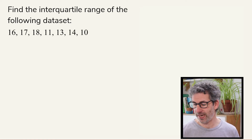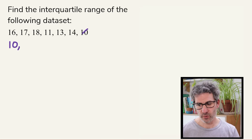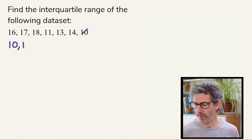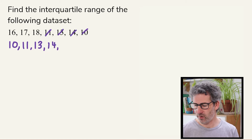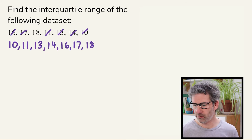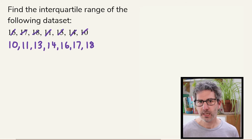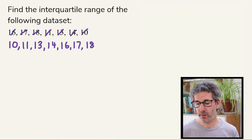The smallest number here is 10 — I'll write that down and cross it off. Then we've got 11, cross it off, 13, cross it off, and so on. I'll quickly go through the rest of those. Now we've got our list of values in order from smallest to biggest.